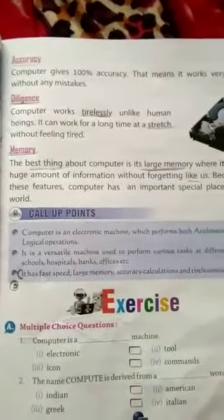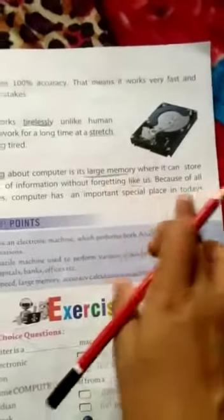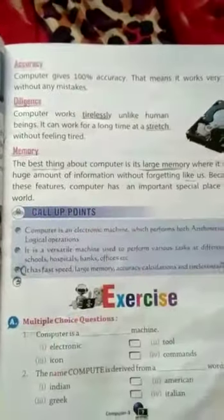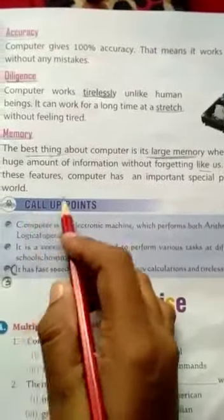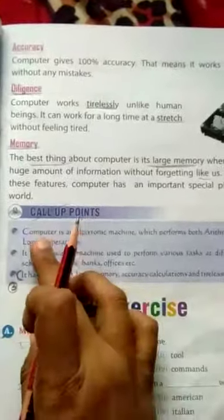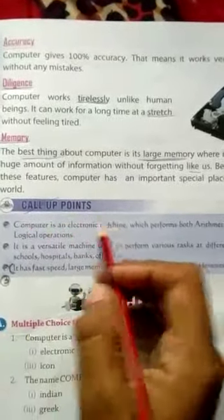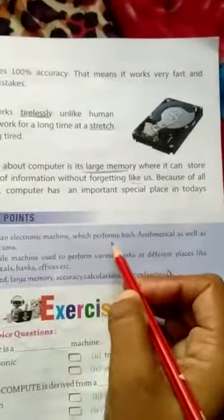इन सभी qualities के कारण — speed, accuracy, diligence, और memory — हम इसको संसार में हर जगह देखते हैं। Call-up points में कुछ ज़रूरी points हैं। Computer is an electronic machine।